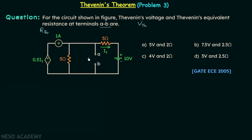When you observe the given network you will find terminal A and terminal B, and we need to find Vth and Rth at these two terminals. There are four options given in the question and we need to choose one correct option. We will begin our calculation of Vth first and after that we will calculate Rth.